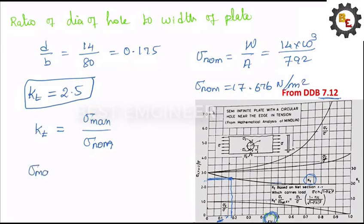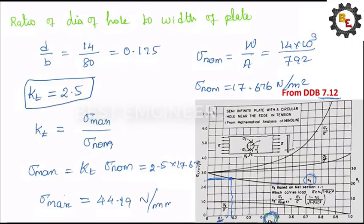Let's substitute here. Sigma max equals KT into sigma nominal. KT value is 2.5 into nominal stress 17.67. So sigma maximum stress produced due to the hole equals 44.19 Newton per millimeter square.